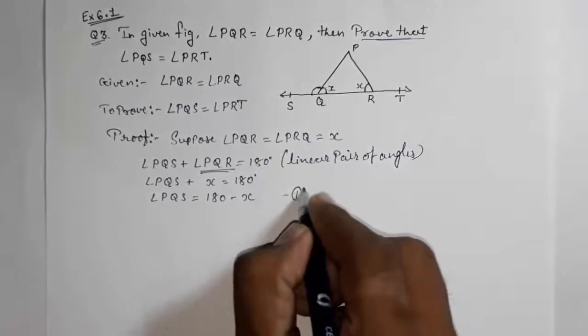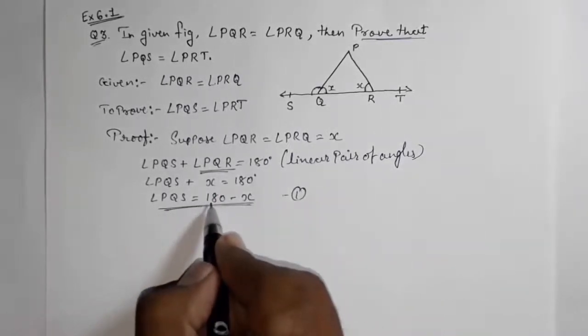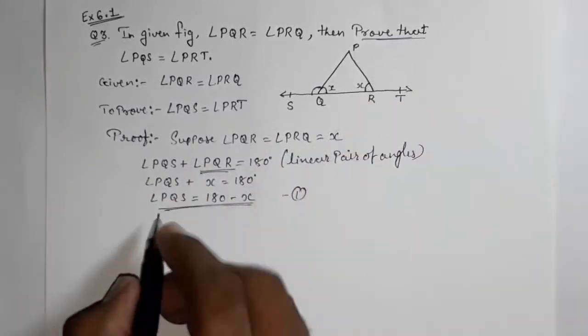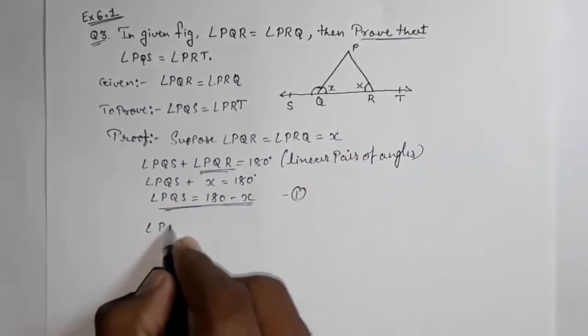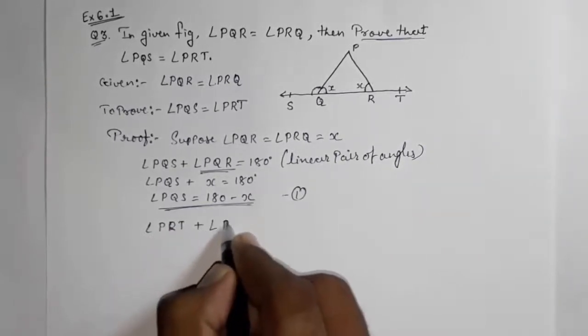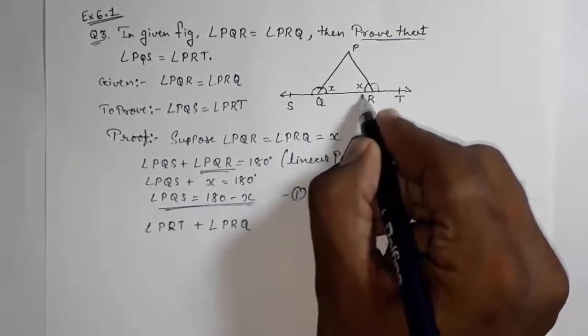Take it as result number 1. We got that angle PQS will be equal to 180 minus x. Similarly, we are going to find out this also. Look at how angle PRT plus angle PRQ—means this exterior plus interior—is also making 180.